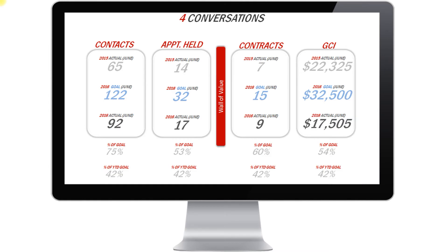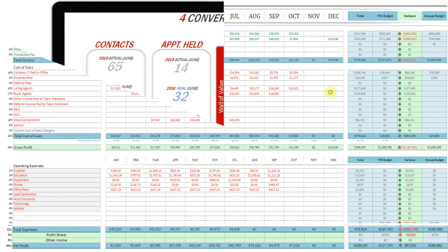Four conversations automatically generates for coaching, so they can see exactly how many contacts you've made today or this month, what the goal is, how many appointments you've gone on and what the goal is, what contracts you've done and what the goal is, and your GCI — what the goal is and what you've done.